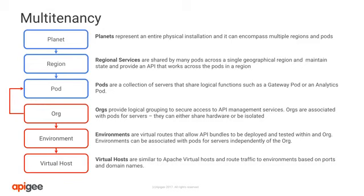An organization is a logical boundary. Organizations enforce logical data partitioning and security. Organizations are key to Apigee Edge multi-tenancy concepts. An organization is a tenant. Apigee Edge is a multi-tenant system. This means you can create one or more organizations on the same physical infrastructure. Environments can be visualized as working spaces within a given organization. Typically, environments are mapped to an API SDLC.